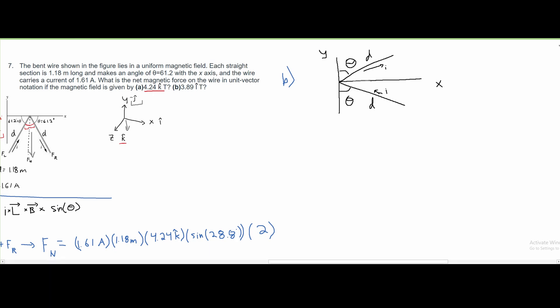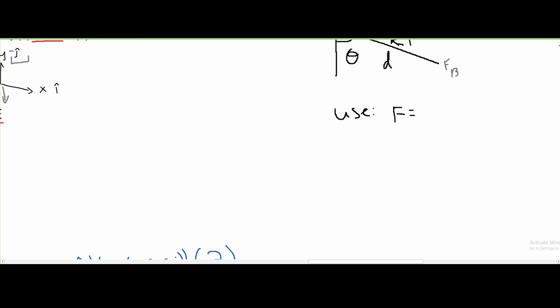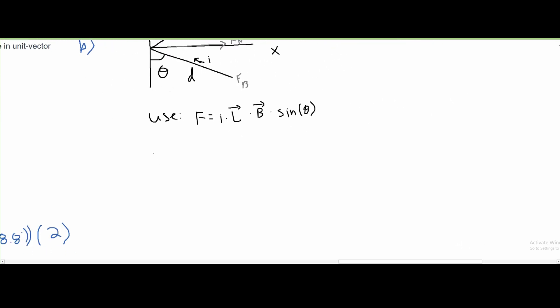Our f_n is down the middle again. We have f_r and f_l, but for this case we'll label them f_t for top and f_b for bottom. We use the same formula: F equals current times length times magnetic field times sine theta. F_net equals f_top plus f_bottom.